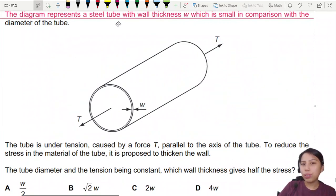The diagram represents a steel tube with wall thickness w, which is very small. See this tiny little w? In comparison with the diameter of the tube, which is pretty big. The tube is under tension,